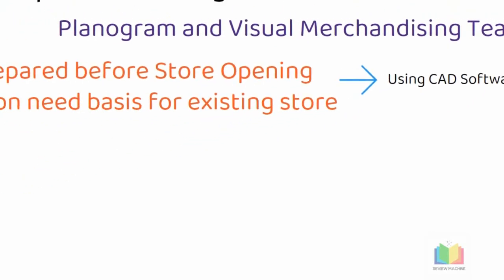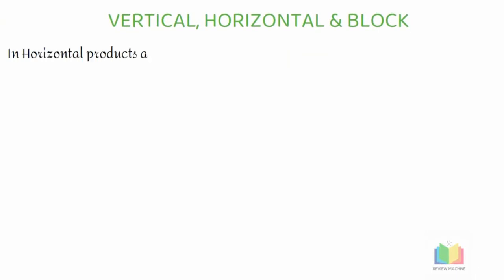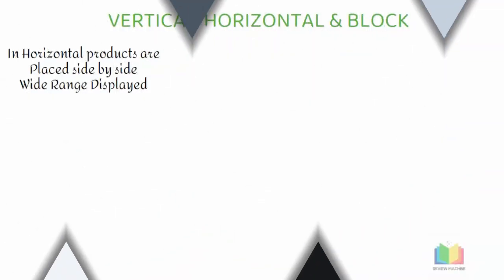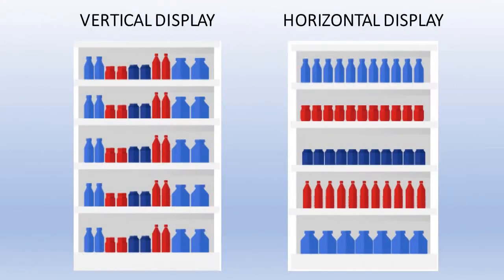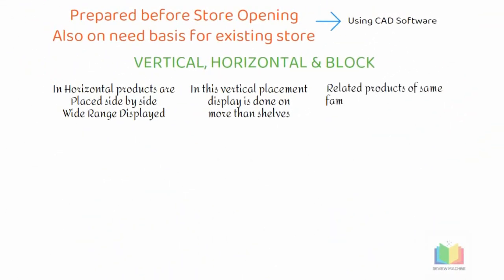In the planogram, products are placed either vertically, horizontally, or they can also be placed in blocks. In horizontal product placement, products are placed side by side on the shelves to offer a wide range of options to customers. In vertical product placement, the display of merchandise is done on more than one shelf level. In block placements, all the related products belonging to a similar family are displayed at one place under one common umbrella.